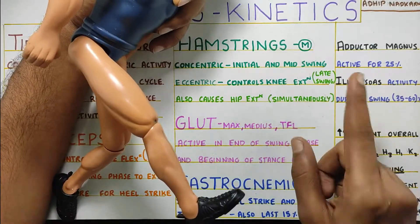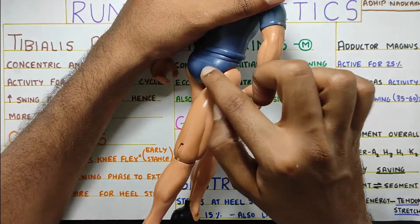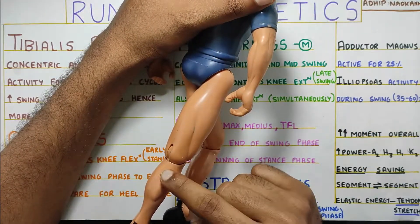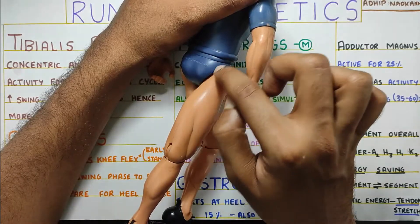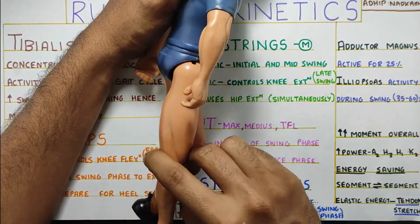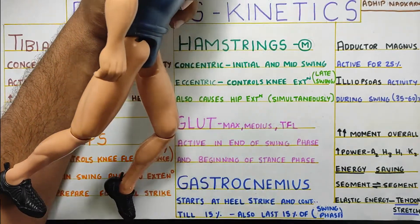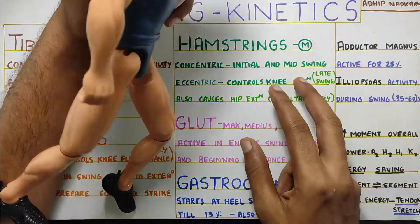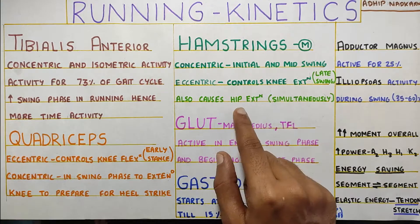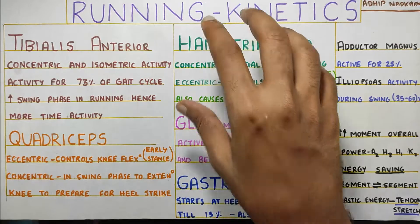Along with this, your hamstring will also cause hip extension because it is attached to the gluteal tuberosity. It is a two-joint muscle — it crosses the knee joint and the hip joint. So at the hip joint, where it is attached to the gluteal tuberosity, when it contracts it can cause hip extension too. Basically it can do two movements simultaneously: knee flexion and hip extension. So that is the function of the hamstring.